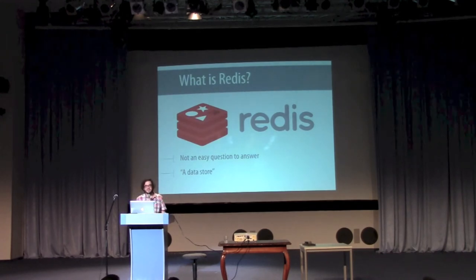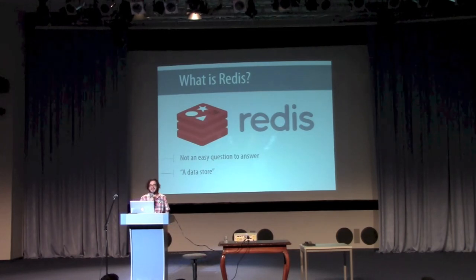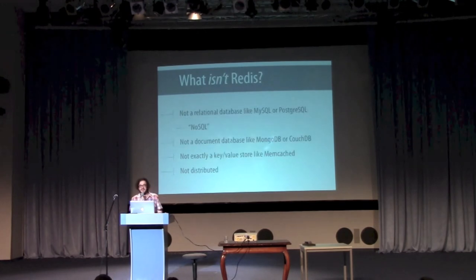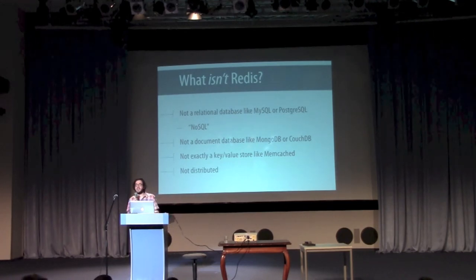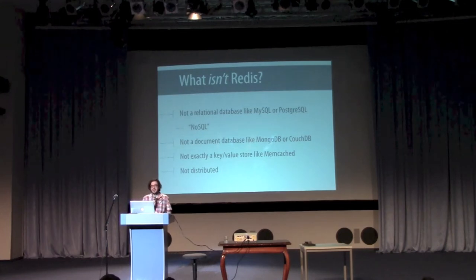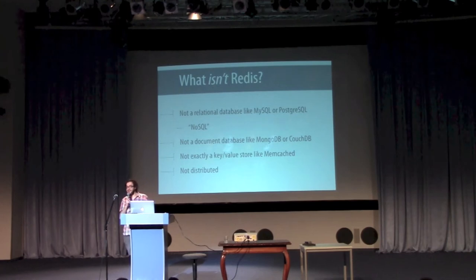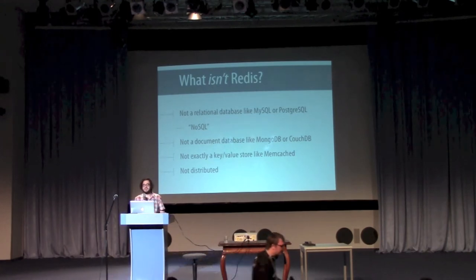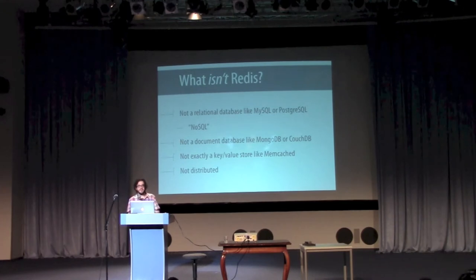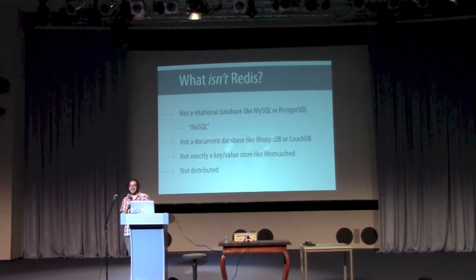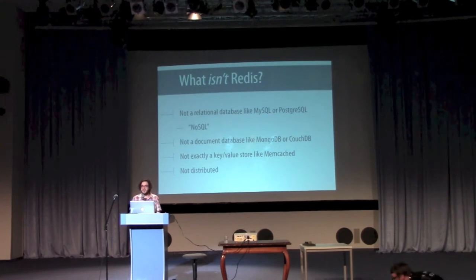That's not an easy question to answer. The short version is just it's a data store, but that doesn't help much. In fact, it's almost easier to start by asking what isn't Redis. It's not a relational database like MySQL or Postgres or SQLite or Oracle or SQL Server. So if it floats your boat, you can happily call it NoSQL. It's not a document database like MongoDB or CouchDB. The closest comparison is something like Memcached, but Redis isn't exactly a simple key-value store either. It's also not itself a distributed system, though you could use it to build one.